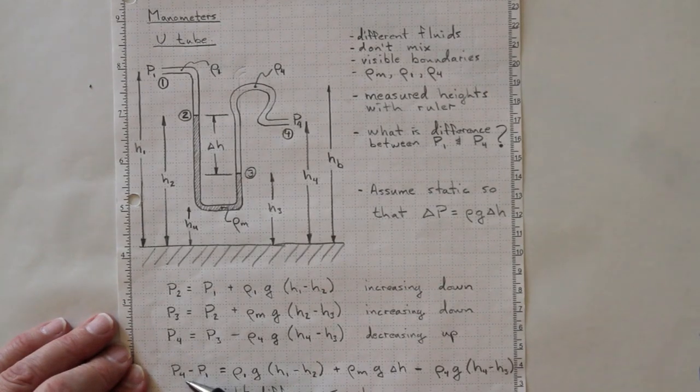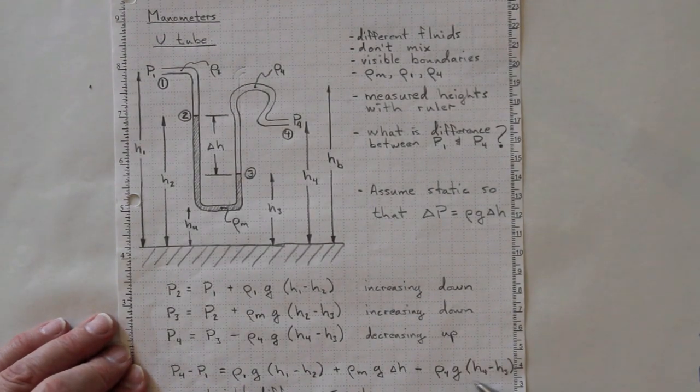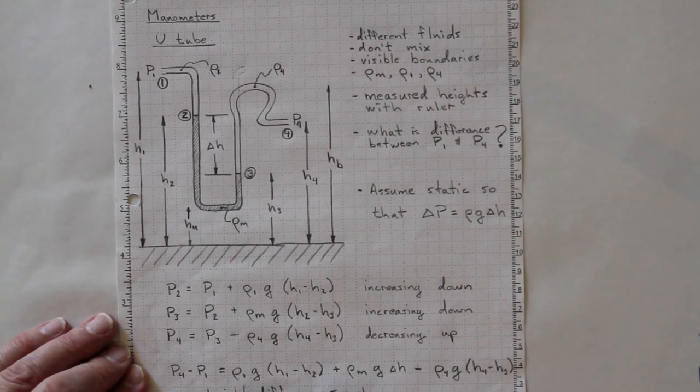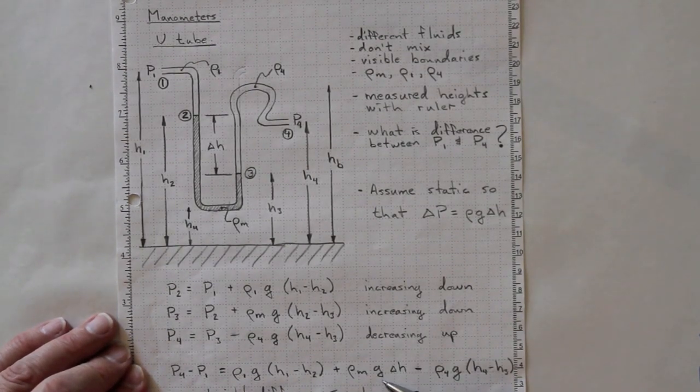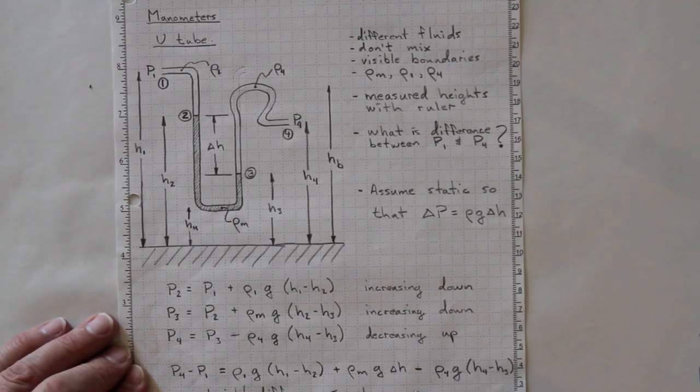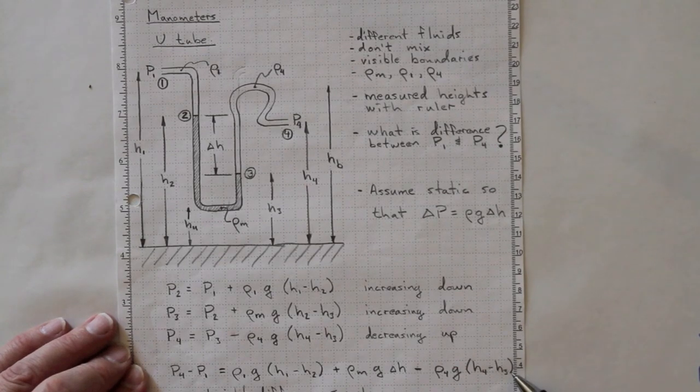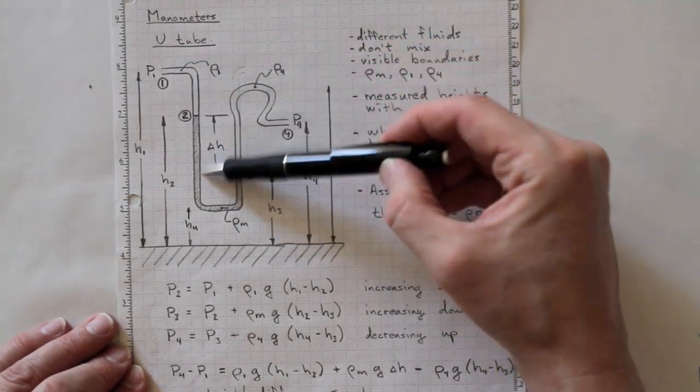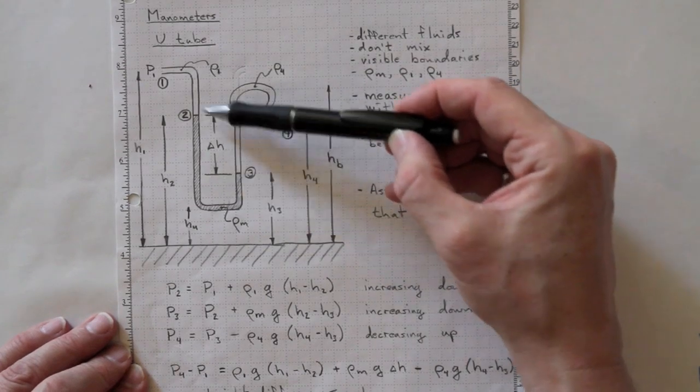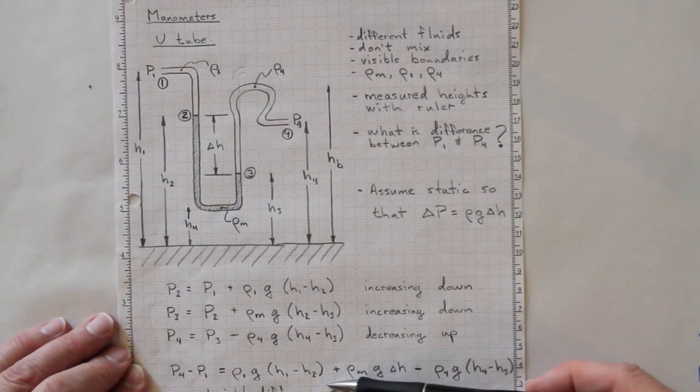So if we want to know the difference in pressure between 4 and 1, we get the combination of all three of these. Rho 1 G H1 minus H2 plus rho manometer G times delta H minus rho 4 G H4 minus H3. And knowing each of these densities, knowing this delta H measure here, and knowing those relative elevations, we can figure out that pressure difference.